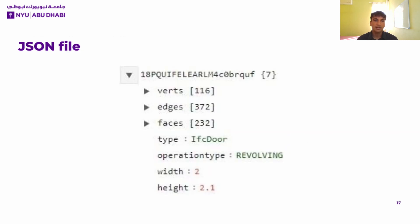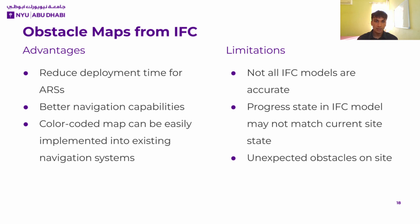We can also take a look at a snapshot from the JSON file. This part represents a revolving door, and at the top we have the element ID, followed by the mesh coordinate information, and finally the door type and dimensions. Overall, the generated obstacle maps can reduce deployment time for ARS, improve their navigation capabilities, and can be easily implemented into existing navigation systems.